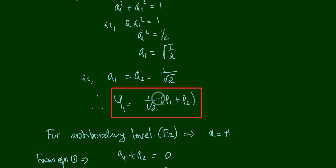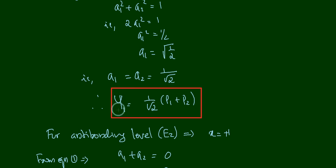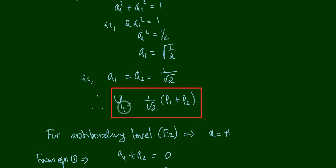Substituting a1 and a2 into the Hückel molecular orbital expression, the bonding molecular orbital is: ψ1 = (1/√2)(p1 + p2). This was derived for x = −1, which corresponds to the bonding level.